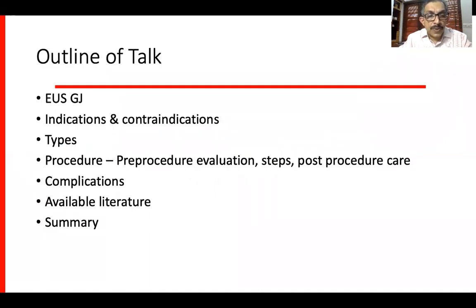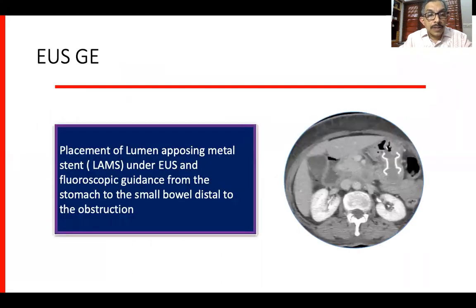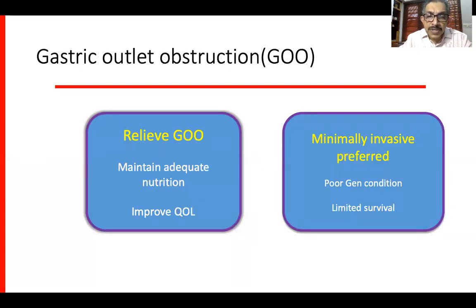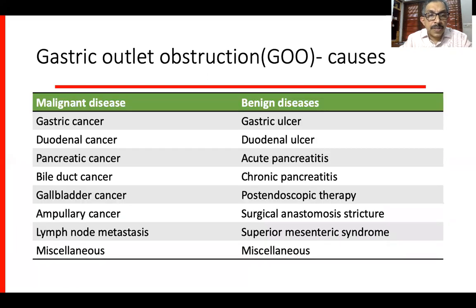The outline of my talk would be as follows. EUS-GE entails placement of a lumen-opposing metal stent under EUS and fluoroscopic guidance from the stomach to the small bowel, distal to the bowel obstruction. Patients with gastric outlet obstruction need some procedure to relieve their condition, to maintain adequate nutrition, as well as to improve quality of life. As they have poor general condition and limited survival, minimally invasive methods are preferred. There can be many causes, malignant as well as benign diseases. EUS-GE is mainly done for malignant diseases.